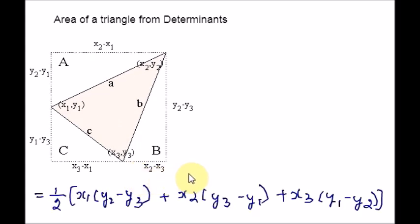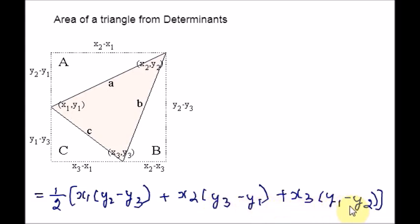In earlier classes, we have studied that the area of the triangle whose vertices are x1, y1, x2, y2, x3, y3 is given by the expression one-half times x1 times (y2 minus y3) plus x2 times (y3 minus y1) plus x3 times (y1 minus y2). Now this same expression can be written in the form of a determinant.